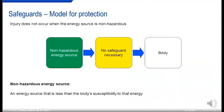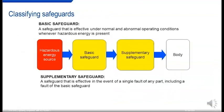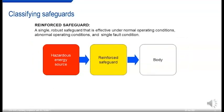Injury doesn't occur when the energy source is non-hazardous. If an energy source is class one, there's no need for any safeguard — class one energy sources are inherently non-hazardous. For hazardous energy sources, basic safeguards protect us in normal and abnormal operating conditions, and a supplementary safeguard protects us in the event of a fault, including if the basic safeguard itself fails. A reinforced safeguard is a single robust safeguard effective under normal, abnormal, and single fault conditions — a good example being reinforced insulation.